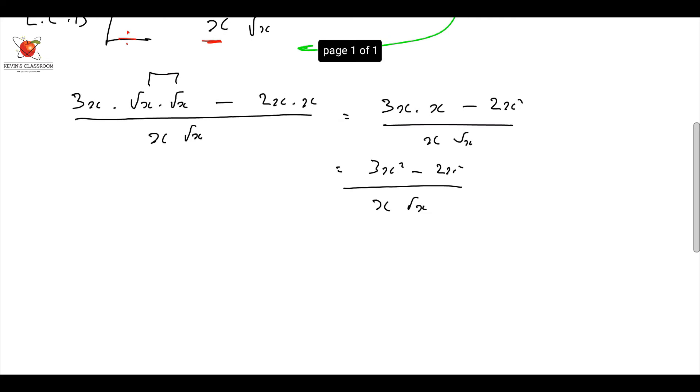Now, the last step is to say, well, 3x squared minus 2x squared, is going to give me, what? 1x squared over x root x. Now, I can cancel out at the top and the bottom, and that's going to leave us with an x on top and a root x at the bottom.